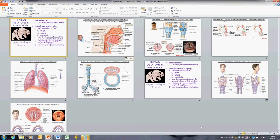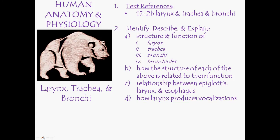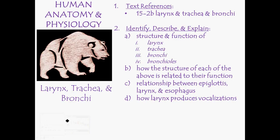Welcome to another screencast where this time I'll be discussing the larynx, trachea, and the bronchi. By the end of this, you should be able to identify, describe, and explain the structure and function of the larynx, the trachea, the bronchi, and the bronchioles — and how the structure of each is related to their function. We'll also cover the relationship between the epiglottis, the larynx, and the esophagus at the intersection of the food tube and the air tube, and how the larynx produces vocalizations or sound.